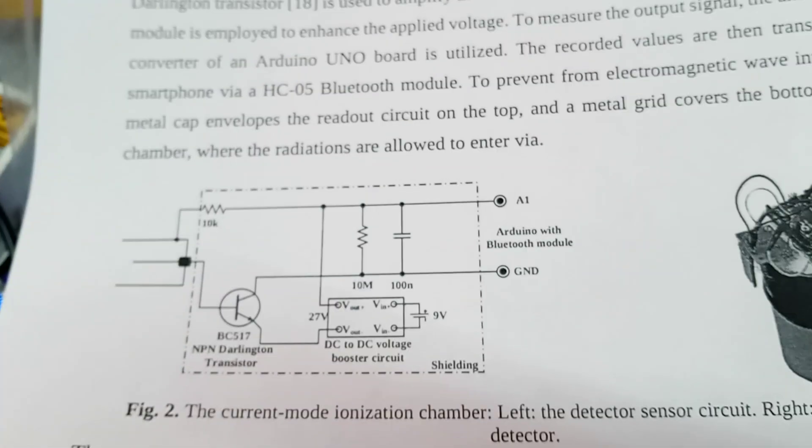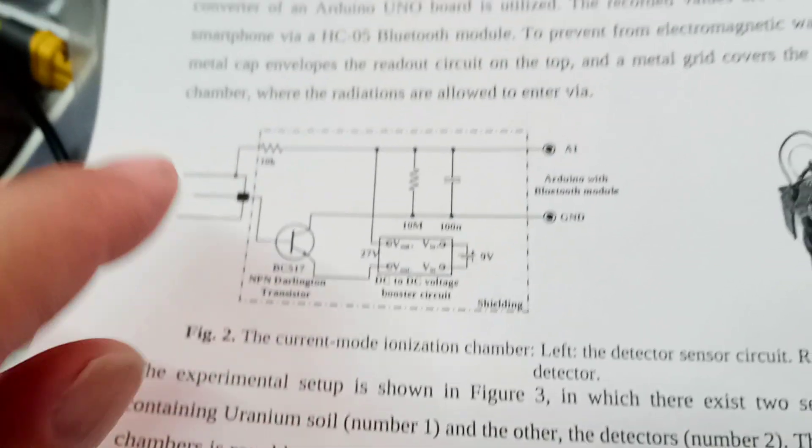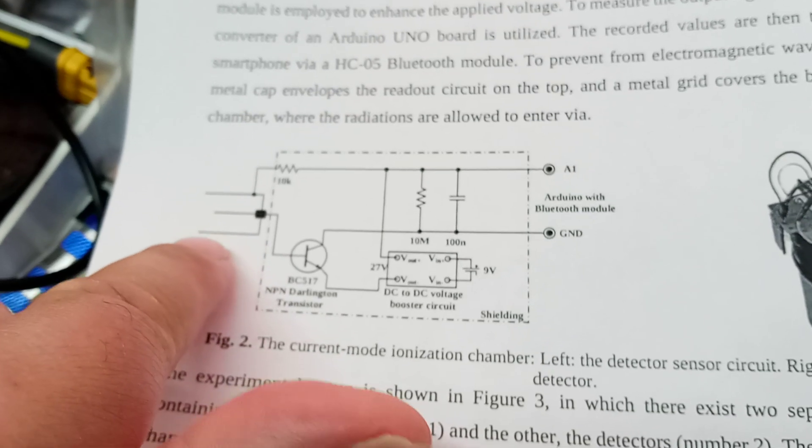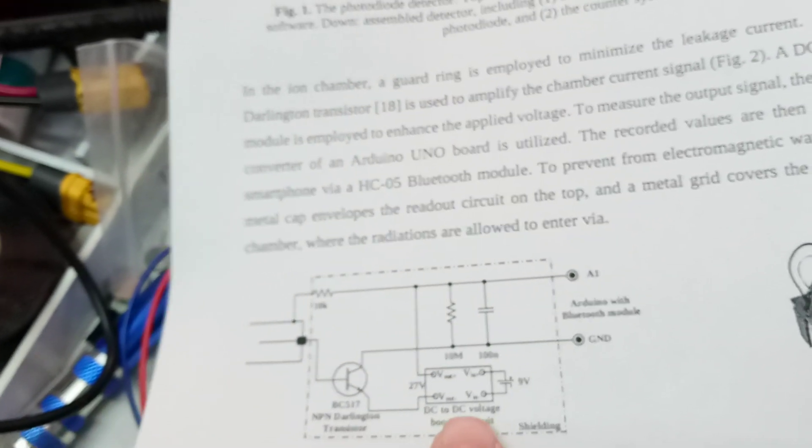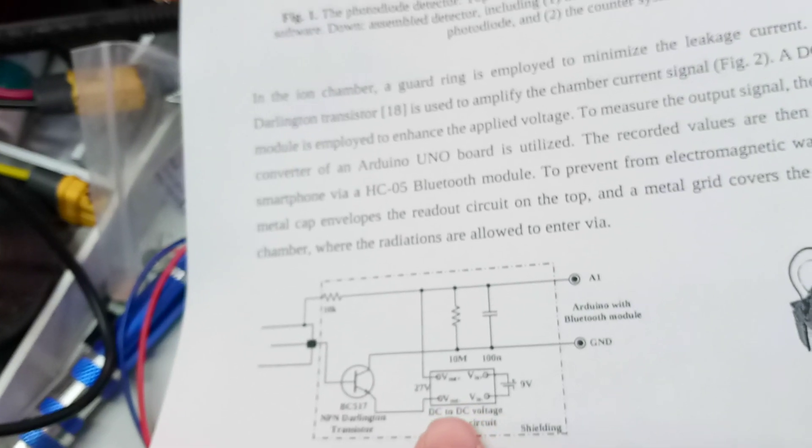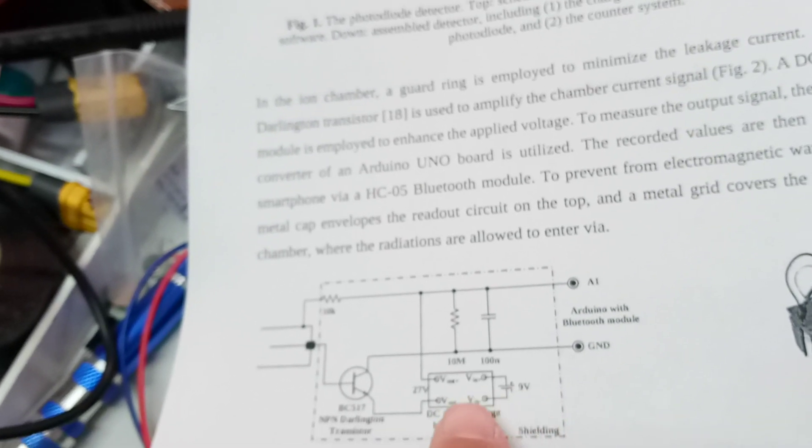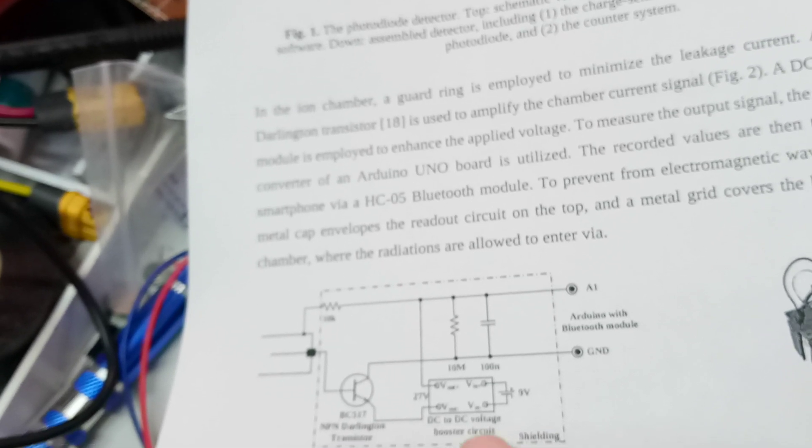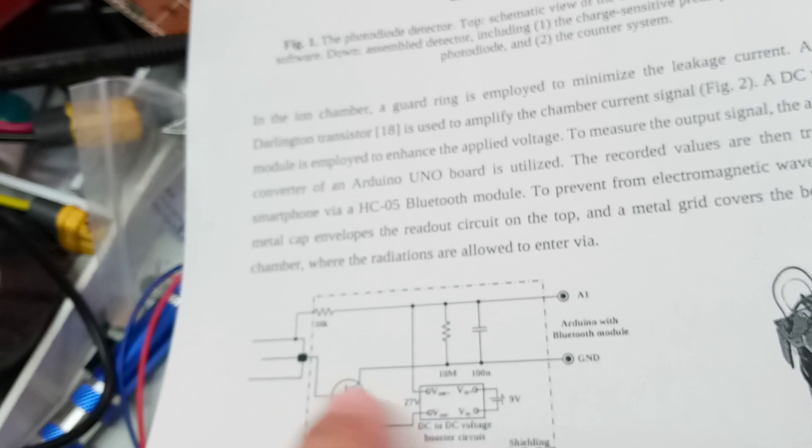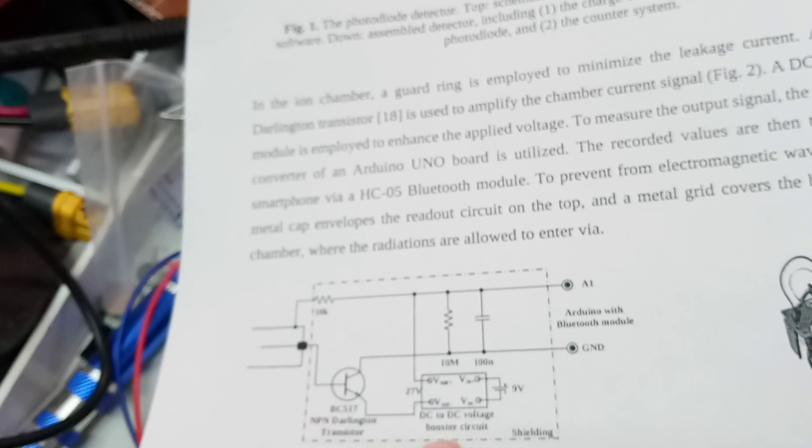So, this is a Geiger-Müller tube, which is really puzzling, because it's got a 27-volt supply here. So, 9-volt goes to 27 volts, and I'm really not quite understanding this circuit, to be honest.